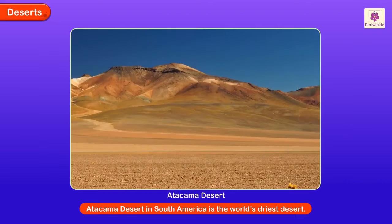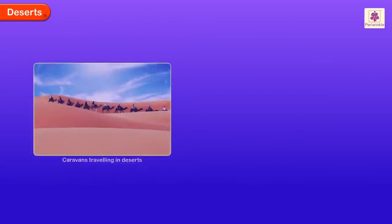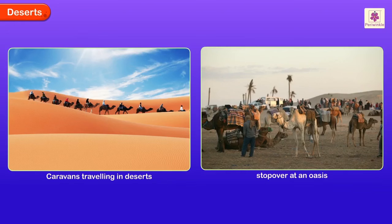In a desert, an oasis is an isolated area of vegetation, generally close to a water source. An oasis is a habitat not only for animals but also for humans. Caravans travelling in deserts always include a stop over at an oasis in order to replenish food and water supplies.